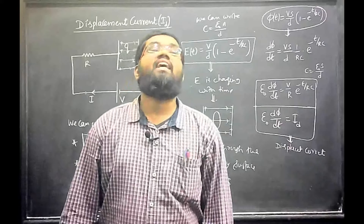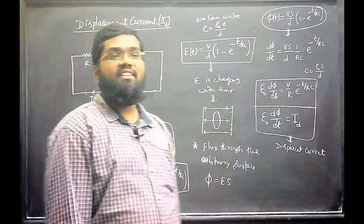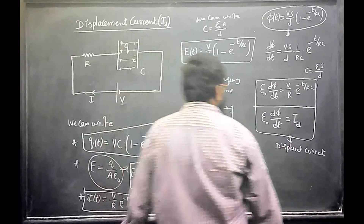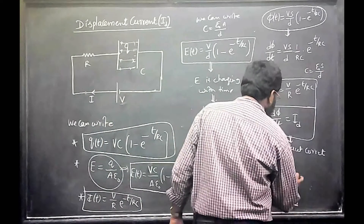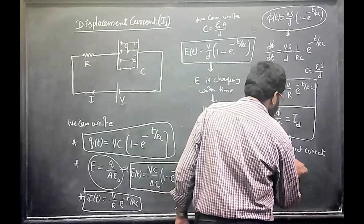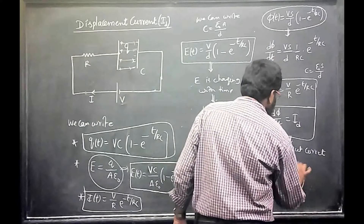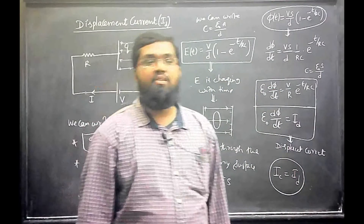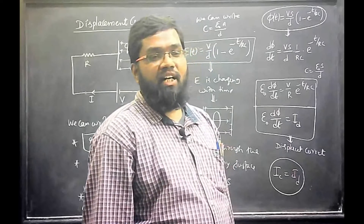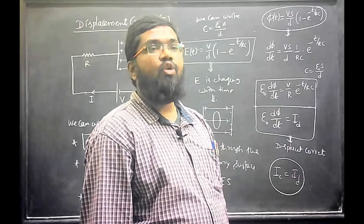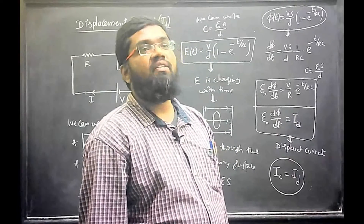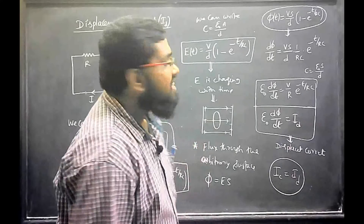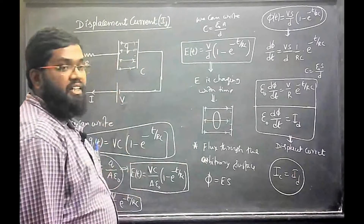Displacement current is related to the rate of change of electric flux — not magnetic flux, but electric flux. In this example, the conduction current in the external circuit is the same as the displacement current between the plates. Both are equal. This is what displacement current actually is. You can refer to the NCERT book, electromagnetic chapter, section on displacement current for further reading.